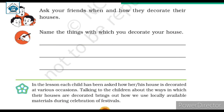Now, ask your friends when and how they decorate their houses. Aap apne friends se puchiye ki woh kab apne ghar ko kin cheezon se decorate karte hain. Name the things with which you decorate your house: lights, flowers, garlands, pictures, photographs, various lights, rangolis, paper stars, statues, colorful hangings, colors, colorful stickers.